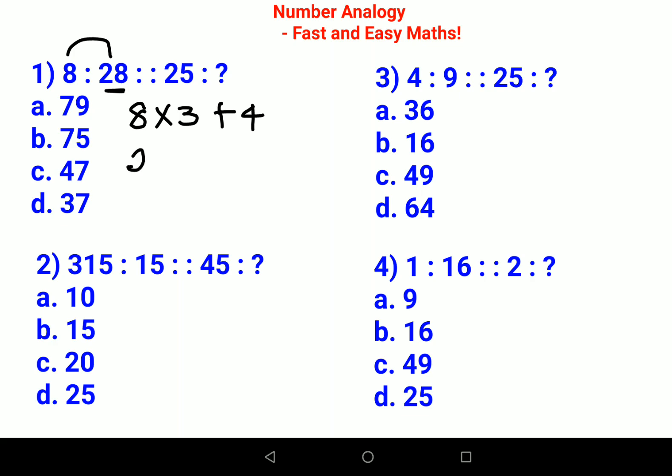Similarly, we'll multiply 25 into 3 plus 4, so 25 into 3 gets you 75 plus 4 will get you 79. So option A is our answer.